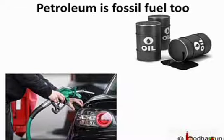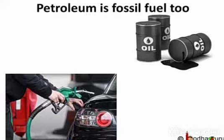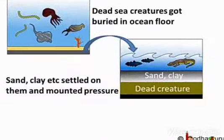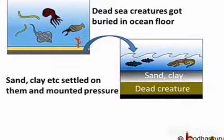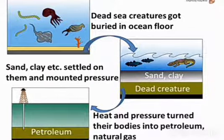Petroleum is also a fossil fuel, which means it is formed from the remains of dead organisms, but it is liquid. The process of its formation was much different from the formation of coal. Petroleum was formed from the remains of sea organisms. As they died, their bodies settled at the bottom of the sea or ocean and gradually got covered by sand, clay, etc. Over millions of years, absence of air, high temperature, and high pressure transformed the dead organisms into petroleum.